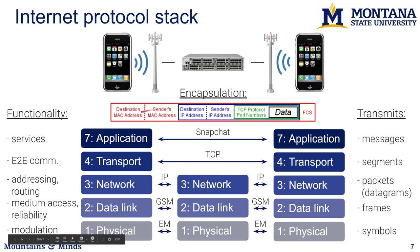Each protocol encapsulates your data with headers needed for that protocol to make decisions. Your application data gets wrapped in a TCP packet with its headers, then wrapped in an IP packet containing sender and receiver IP addresses, then wrapped in a data frame with MAC addresses at the link layer. The source and destination MAC addresses allow a data frame to jump one link, and then the next node rewrites them to send it on the next link.